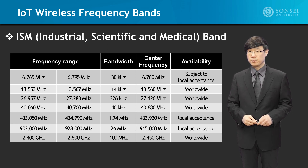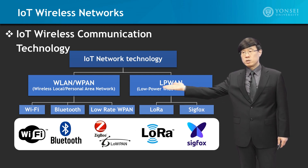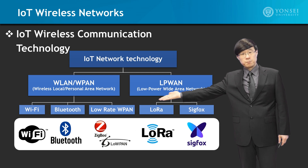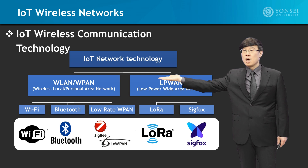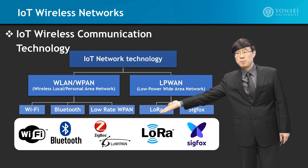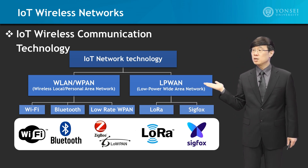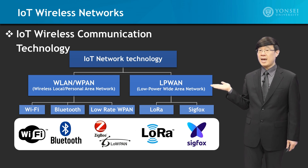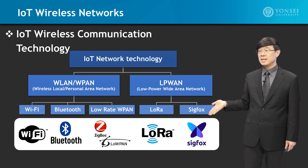Which services? In terms of wireless local area network technology, WLAN, which is represented by Wi-Fi. Also WPAN, wireless personal area network technology, represented by Bluetooth, ZigBee, and 6LoWPAN. In addition, we will look into LPWAN, which is low power wide area network technology, represented by LoRa and Sigfox.